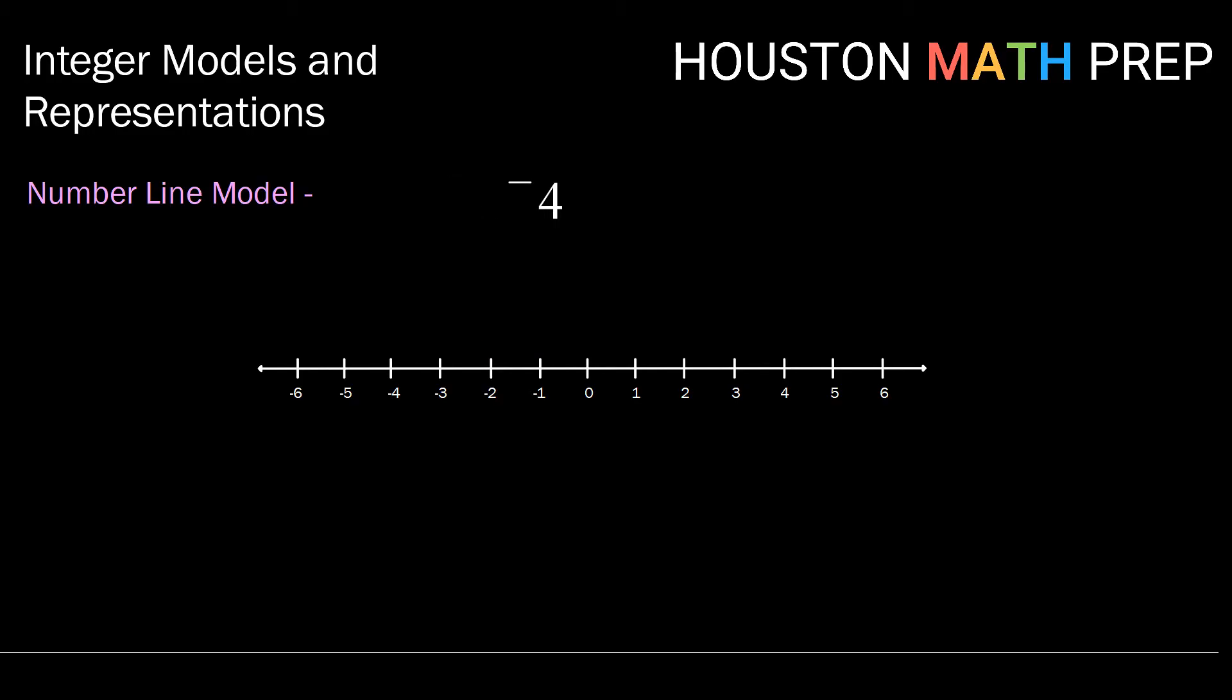How about negative 4? Finding 0, we're going to go 4 units in the left or negative direction. So there is our number line model for negative 4. And finally, how about 1? It's a positive value. Find 0. We're going to go 1 unit in the positive or right direction.